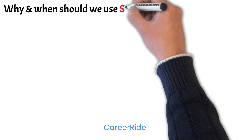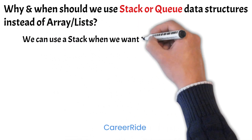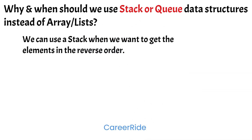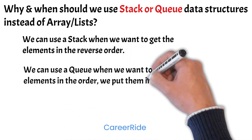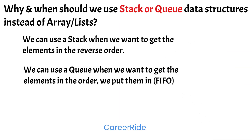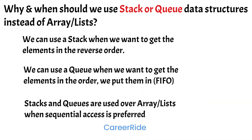The next question is: why and when should we use a stack or queue data structure instead of an array or list? We can use a stack when we want to get elements in reversed order. We can use a queue when we want to get elements in the order we put them in, that is FIFO. Also, stacks and queues are used over arrays or lists when sequential access is preferred, because arrays are better for random access.